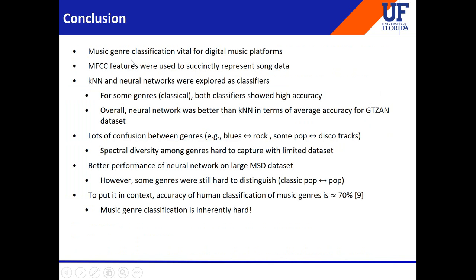In conclusion, we performed musical genre classification using MFCC feature vectors. Two types of classifiers were explored: K-nearest neighbors and neural networks. Overall, neural networks performed slightly better than K-nearest neighbors on the GTZAN dataset, and the neural network also performed reasonably well on the MSD dataset. There was a lot of confusion between genres, which is natural — a study performing music genre classification using human subjects achieved only 70% accuracy, highlighting why this is inherently a hard problem.